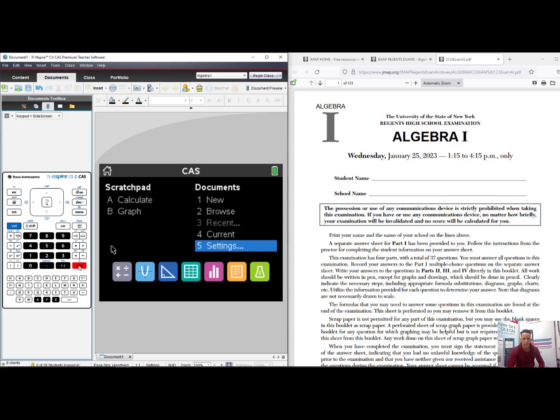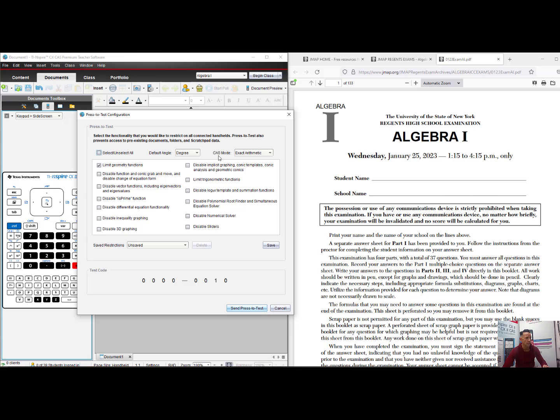And now my emulator will mirror that of the New York State Math Regents exams. If you want to put the students' handhelds into exam mode in the software, look for the Prepare Handhelds icon. Click on it and scroll down to Send Press to Test and select Choose Test Mode Restrictions. For New York State, we must change the CAS mode to Exact Arithmetic and the only restriction we must select is the Limit Geometry Functions. As we are doing an Algebra 1 Regents exam, this will not come into play. Send Press to Test will push this test mode setting to all connected calculators in the docking station, or with Navigator, send it wirelessly to all handhelds.